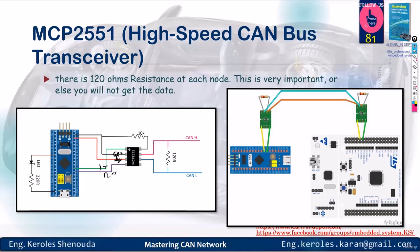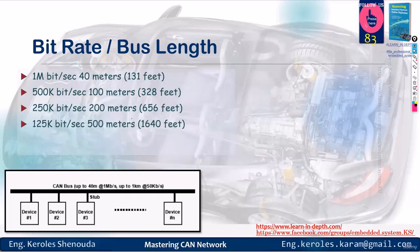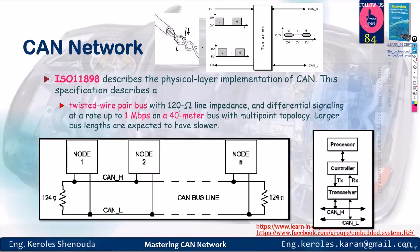The diagram shows the nodes that send data over the bus, and you can also see the bus itself. As discussed earlier, the bit rate decreases as you increase the distance or length of the bus. The ISO standard is responsible for the twisted pair concept. We handle TX and RX as digital signals, while the transceiver converts them into a differential twisted pair wire.